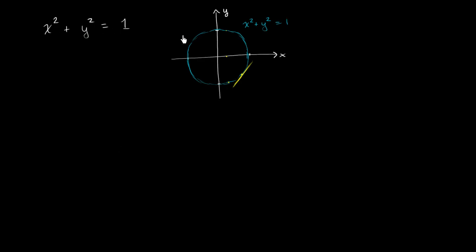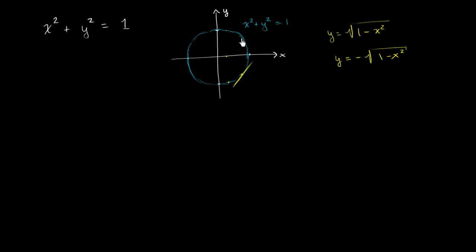So you might be tempted to maybe split this up into two separate functions of x. You could say y is equal to the positive square root of 1 minus x squared, and you could say y is equal to the negative square root of 1 minus x squared, and take the derivatives of each of these separately — and you would be able to find the slope of the tangent line at any point. But what I want to do in this video is literally leverage the chain rule to take the derivative implicitly, so that I don't have to explicitly define y as a function of x either way.